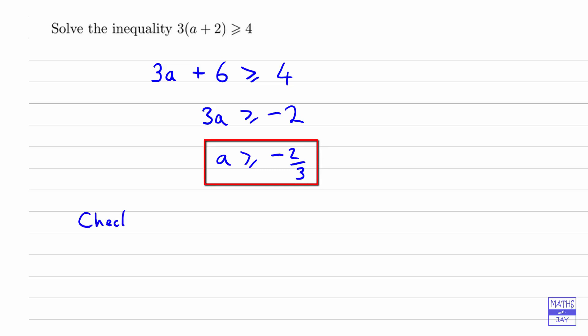Then we would want to do a couple of checks. First check is we would check for equality when a is -2/3, so we've got 3 times -2/3 plus 2. That's 3 times, well, 2 take away 2/3 is going to be 1 and 1/3 or 4/3, so that's equal to 4, which is what we want.